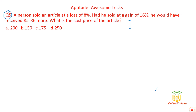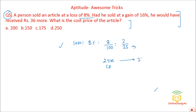Now the toughest question of today's class — try it first. A person sold an article at a loss of 8%. 8% = 8/100 = 2/25. So if the person bought at 25 rupees, the loss is 2 rupees, and the selling price is 23 rupees. Had he sold at a gain of 16%, then 16% gain on 25 would give a selling price of 29 rupees.